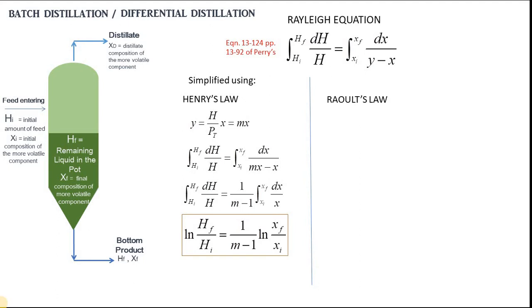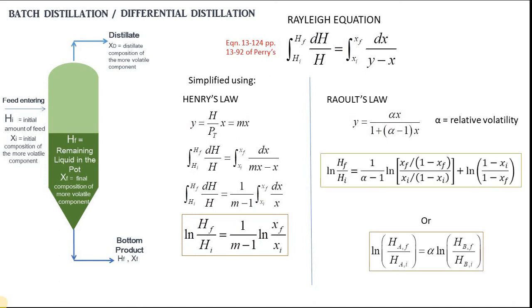In Raoult's law, Y is equal to an expression where alpha is the relative volatility. Substituting Y into the Rayleigh equation, we have the following equations.